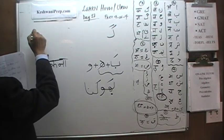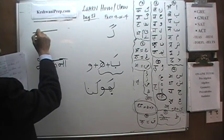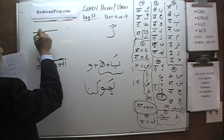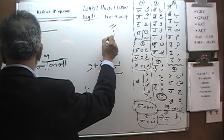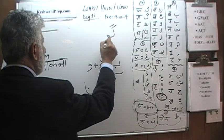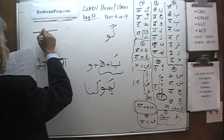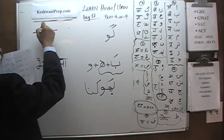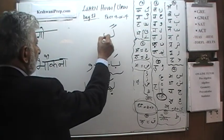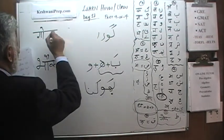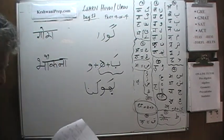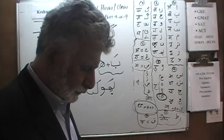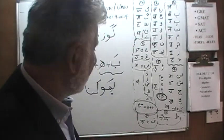Gha — to which we're going to add Vav, so that makes a Go. And then Ra — Gora. Gora as in white.